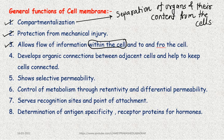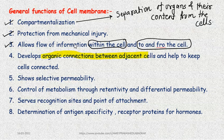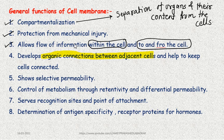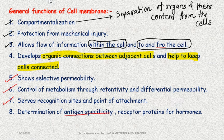Information transfer within the cell — from one organelle to another — is possible. Two types of transfer are possible: organic junctions, which are natural connections between adjacent cells (explained in a previous video on modifications), and selective permeability through which it controls metabolism. It also provides recognition sites for identification, attachment points, and antigen specificity. Receptor proteins for hormones are also present.